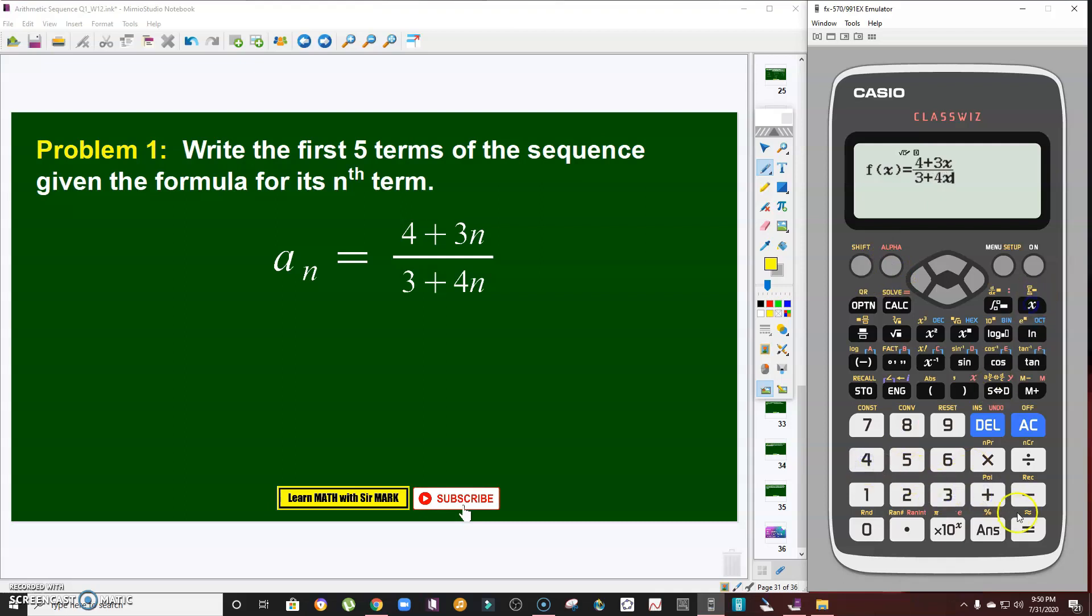Then to go to the denominator, move the cursor there using the navigation button, then press 3 plus 4n or 3 plus 4x. There you go. Then ignore that part. This table range will correspond to the number of terms in the sequence. If you want to display the first five terms, just one to five. If you want the first ten terms, modify it, but since the problem says first five terms, that's okay.